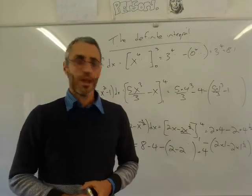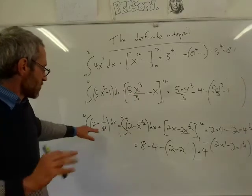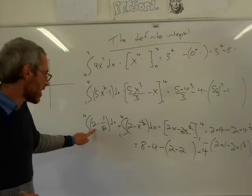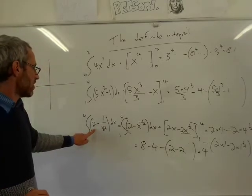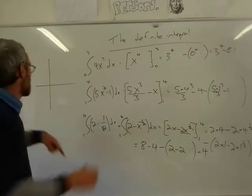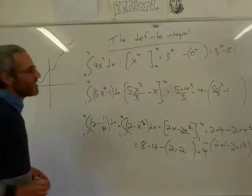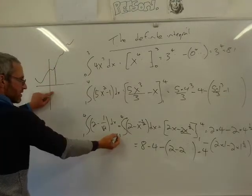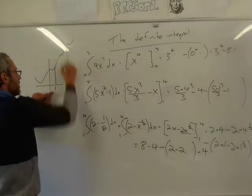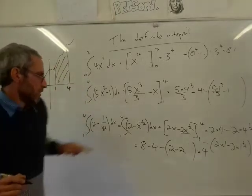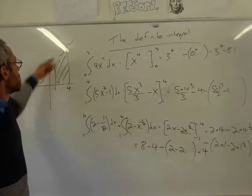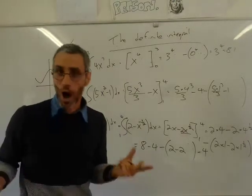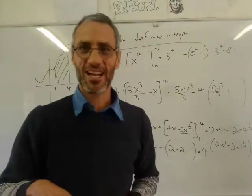What does that 4 mean? It means that if you draw the graph of 2 minus 1 over √x and create the two vertical lines x equals 1 and x equals 4, then 4 is the area between the curve and the x-axis between those two vertical lines. We don't know why that works yet — we're going to learn it next week.